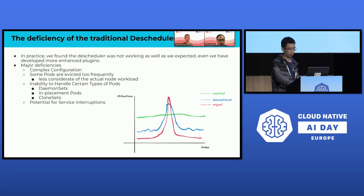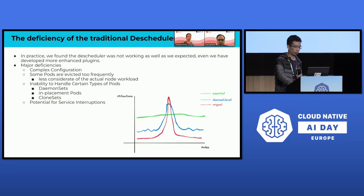Third, inability to handle certain types of pods — there are certain types of pods such as DaemonSet, CloneSet, and StatefulSet pods that the descheduler cannot handle. Fourth, potential for service disruptions — the descheduler-evicted pods may need to face temporary service disruptions, especially if pod disruption budgets are not correctly configured. Fifth, we need to find new ways to further improve resource utilization while maintaining capability.